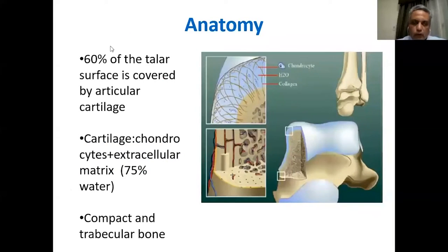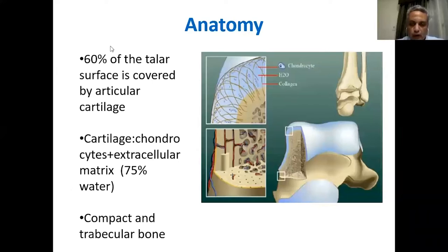First, we are going to talk about the anatomy of the articular surface of the talus dome. Nearly 60% of the articular surface of the talus is covered by articular cartilage — articulating in the ankle or tibiotalar joint, in the talonavicular joint, and in the subtalar or talocalcaneal joint. All these are covered by articular surface.